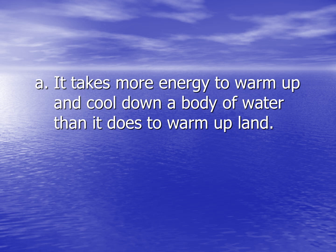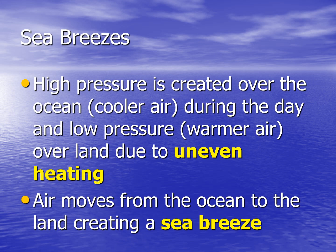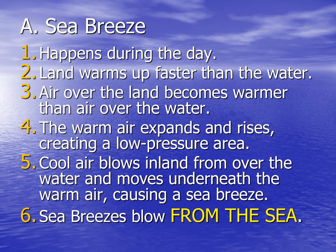A sea breeze is when high pressure is created over the ocean — which will be cooler air during the day — and low pressure, which will be warmer air over land, due to uneven heating between the two. Air moves from the ocean to the land, creating a sea breeze. A sea breeze happens during the day because land warms up faster than the water. When air over the land becomes warmer, the warm air expands and rises, creating a low pressure area. Cool air blows inland from over the water and moves underneath the warm air, causing a sea breeze. Sea breezes blow from the sea to land.